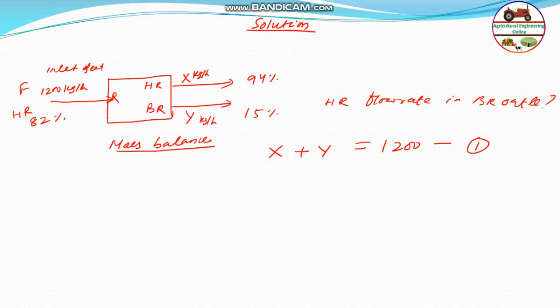Therefore, 94% of 0.94X plus 15% of Y means 0.15Y is equal to 82%. Essentially, it is 1200 × 0.82. This is the important thing, you have to get it.